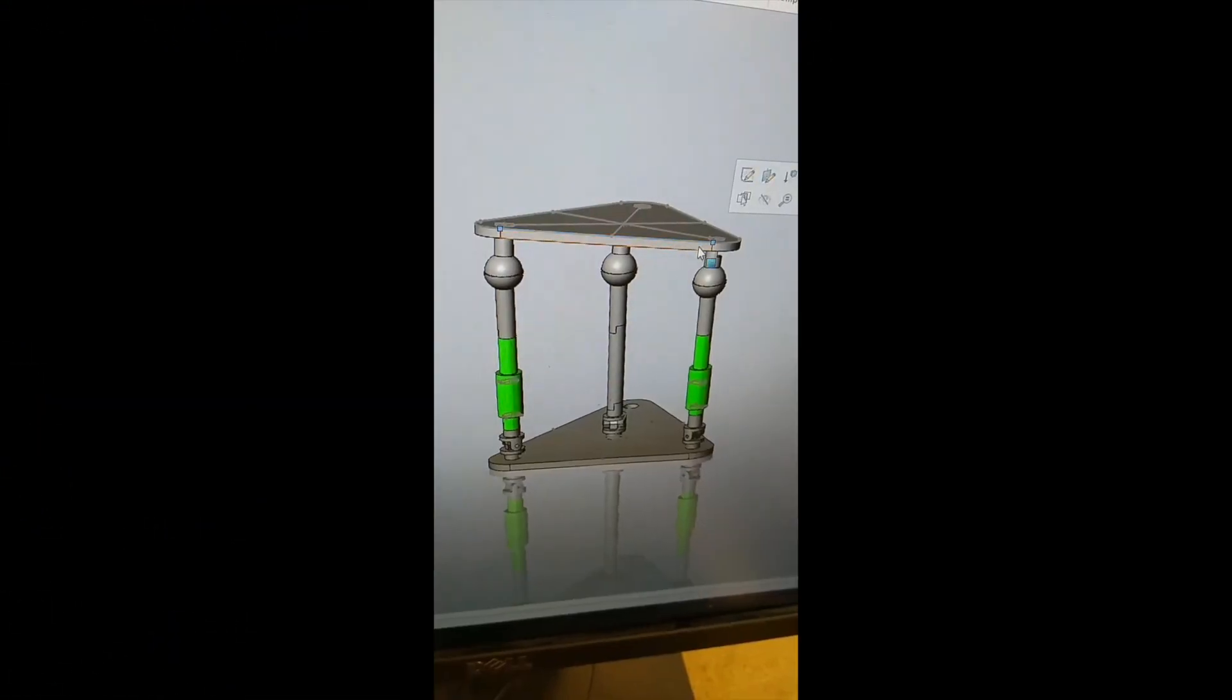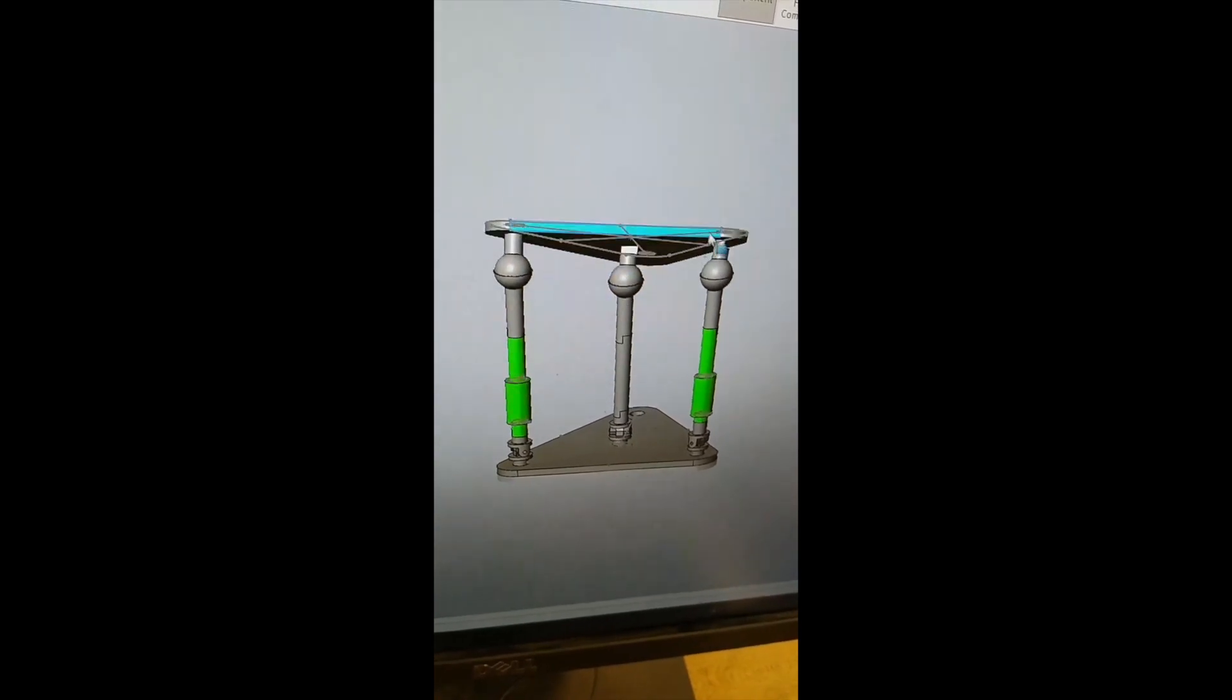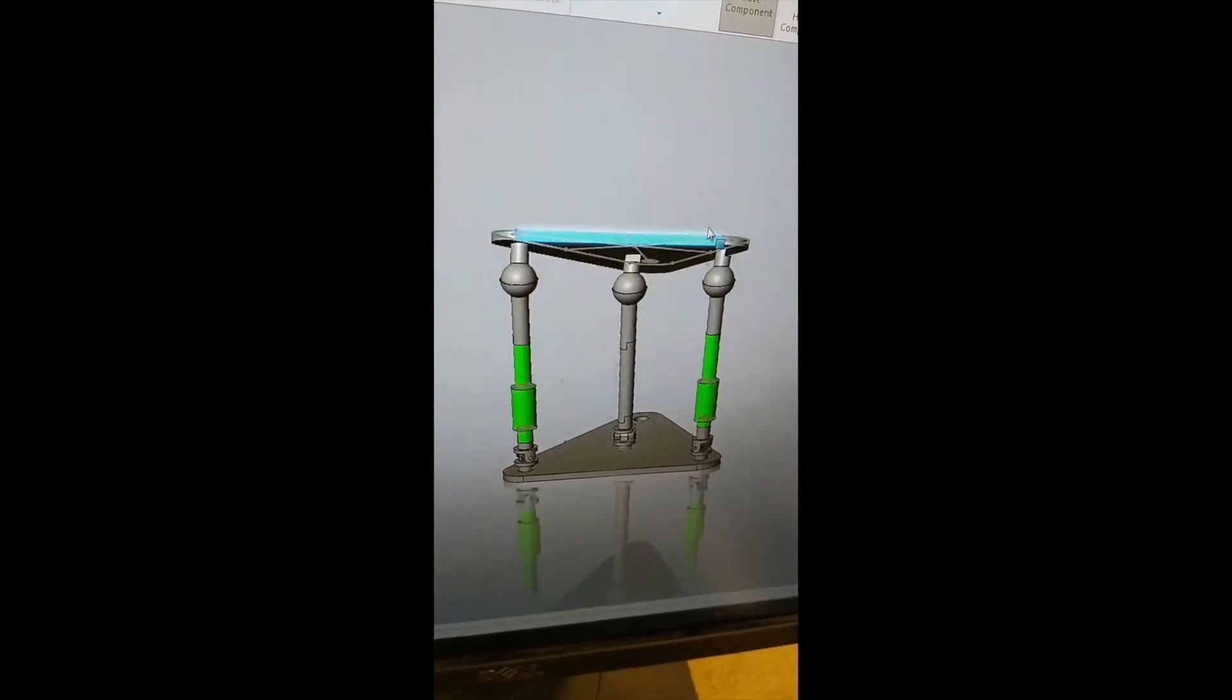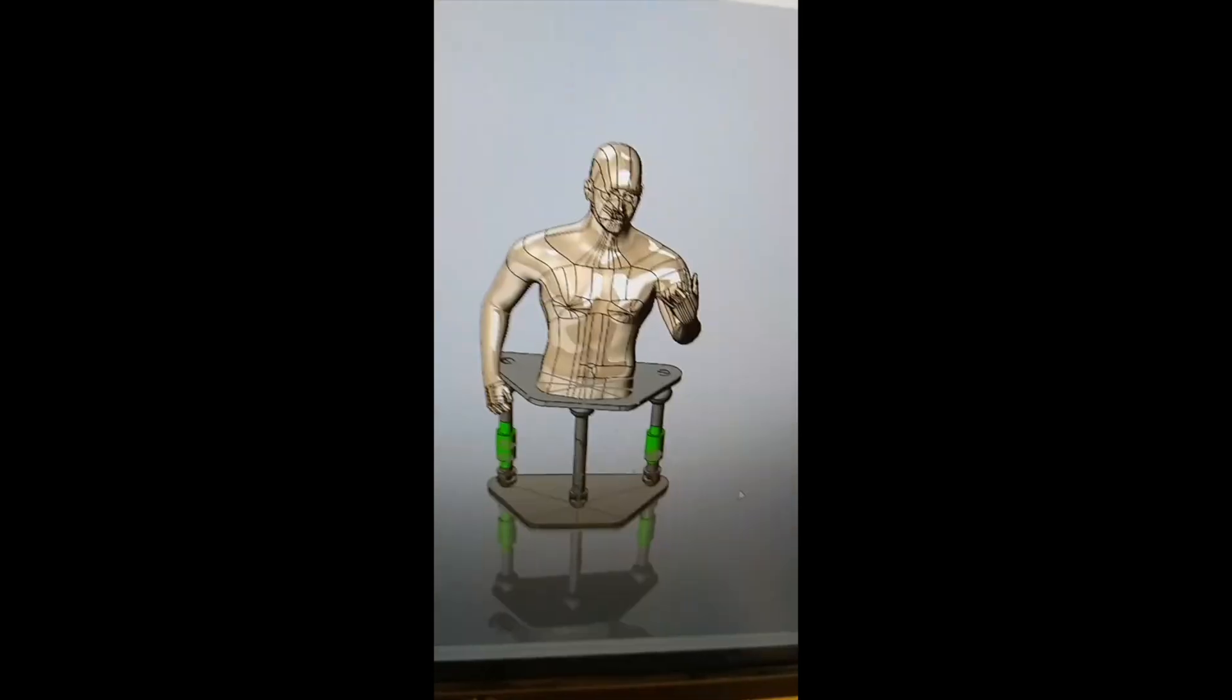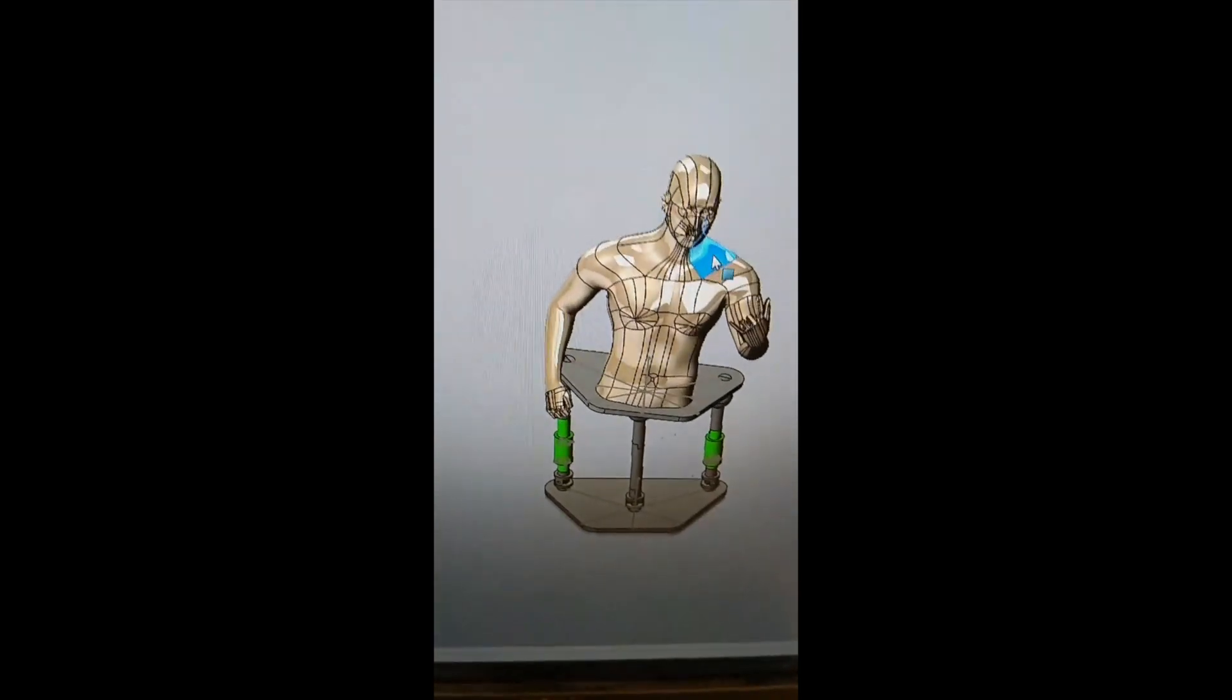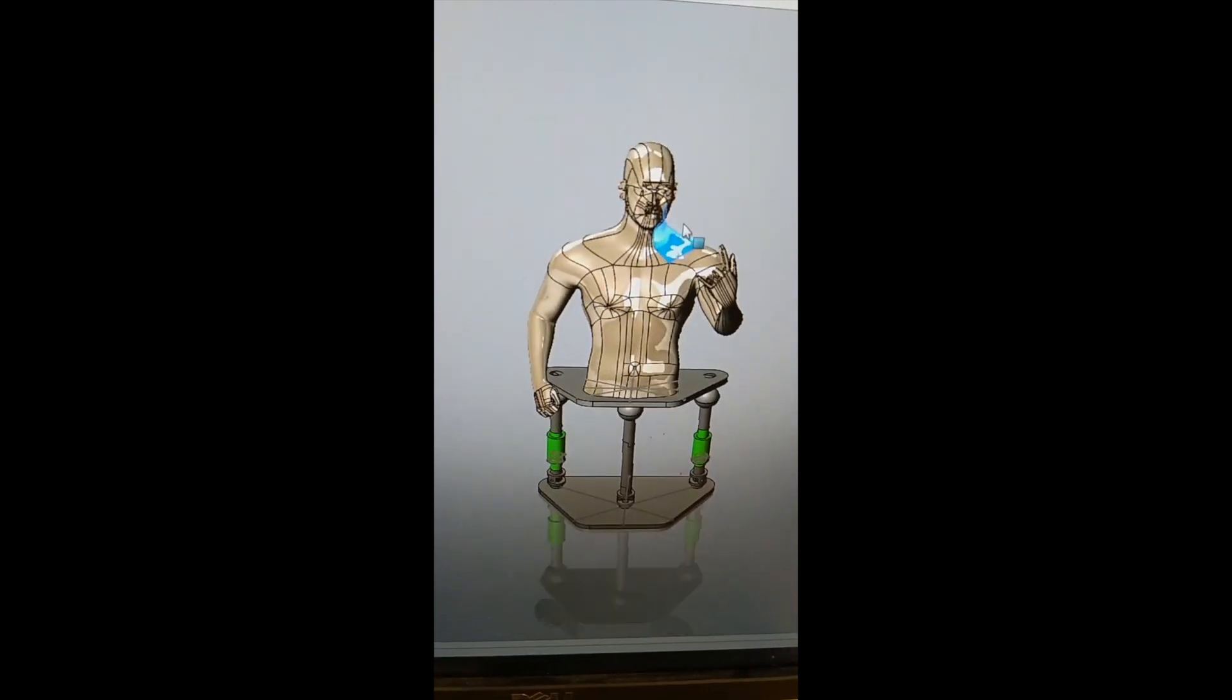The plan is to use two pneumatic cylinders, represented here in green, to tilt a platform left, right, forward, and backward, depending on which cylinders are extended. Notice that the third leg is just a static rod, not a cylinder. You can then mount a boxing dummy onto the platform, and voila, the dummy can move around.